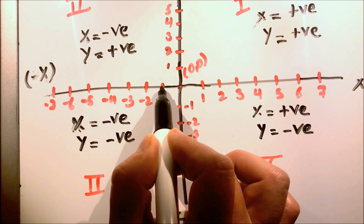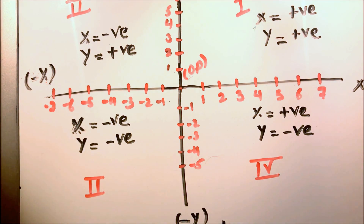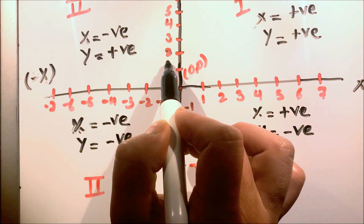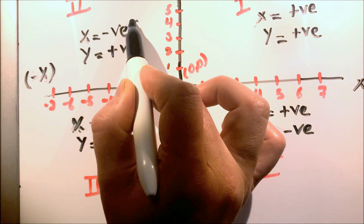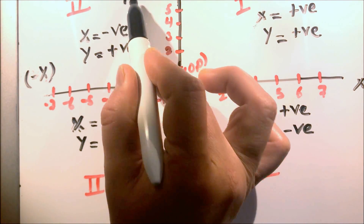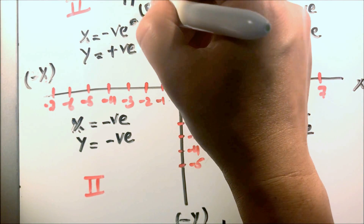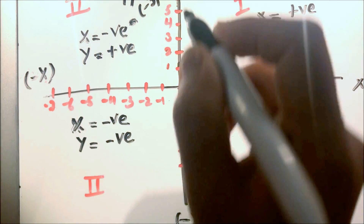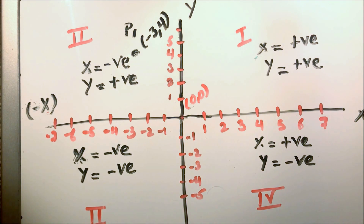So minus three means we go three units to the left: one, two, three. And y is four, so we go up: one, two, three, four. So point P1 will be somewhere here — P1 at coordinates minus three and four. This is how we mark a point on the coordinate plane. This is our point P1.